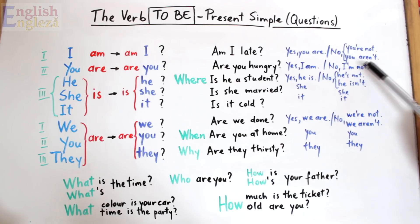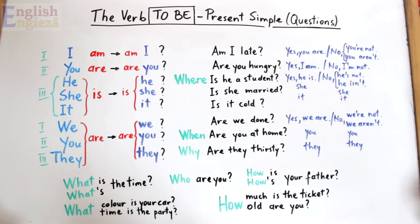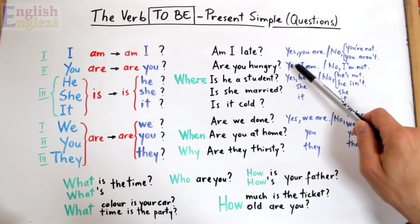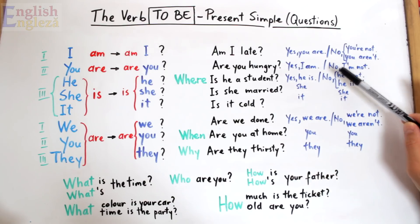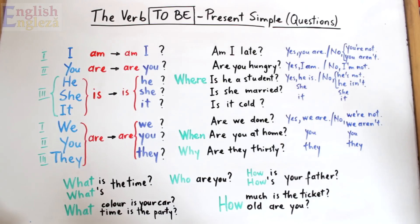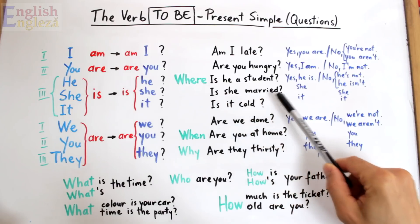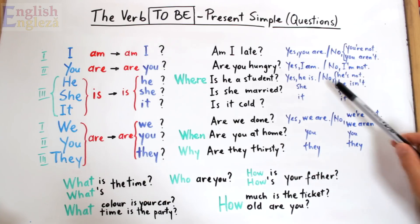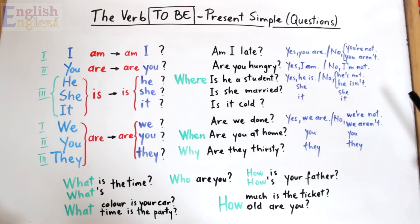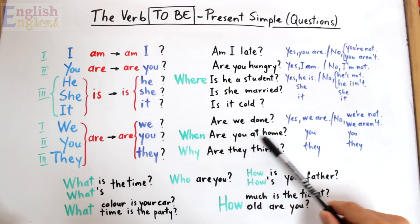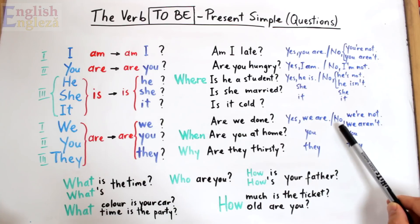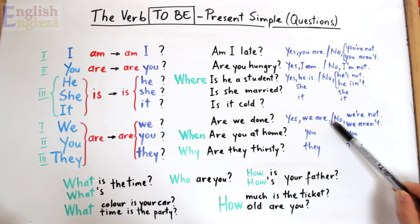Astfel de răspunsuri scurte se pot aplica la toate celelalte persoane. De exemplu, Are you hungry? — Ești înfometat? Yes, I am — da, eu sunt. Sau no, I'm not — nu, nu sunt înfometat. Is she married? — Este ea căsătorită? Yes, she is — da, ea este. Sau no, she's not / she isn't — nu, ea nu este. La fel și la plural: Are you at home? — Sunteți voi acasă? Yes, we are — da, noi suntem. Sau no, we're not / we aren't — nu, nu suntem.